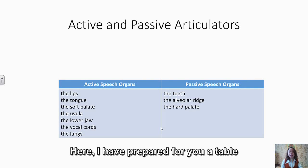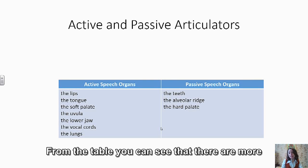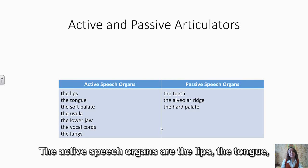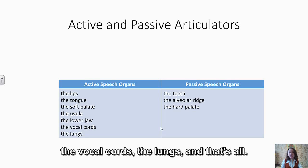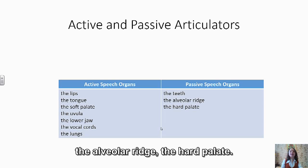I have prepared a table with the active and passive speech organs. From the table you can see that there are more active speech organs than passive ones. The active speech organs are the lips, the tongue, the soft palate, the uvula, the lower jaw, the vocal cords, and the lungs. The passive speech organs are the teeth, the alveolar ridge, and the hard palate.